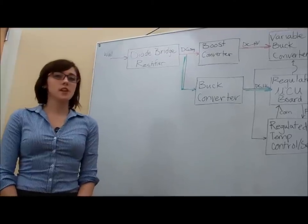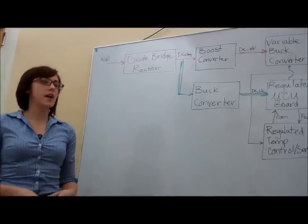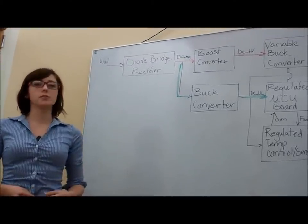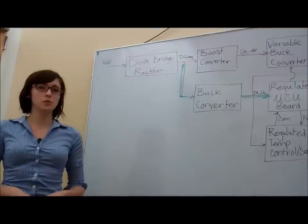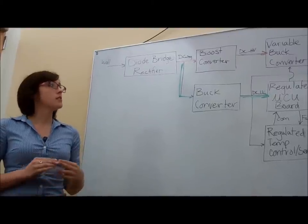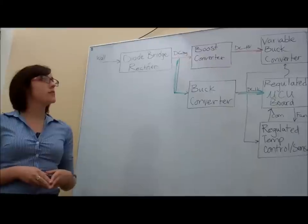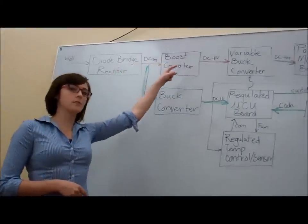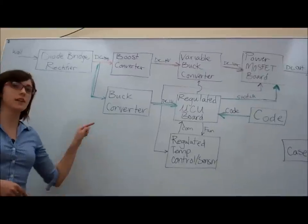In order to meet our project specifications, we need to be able to supply high voltage to the electrode work surface and we also need to be able to control that high voltage. The supply of the high voltage is highlighted by this red path while the control of the high voltage is highlighted by the green path.